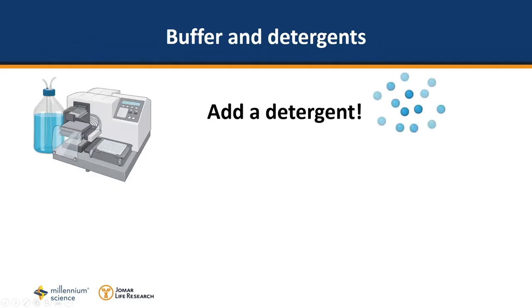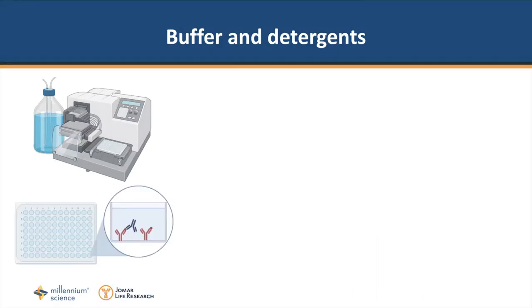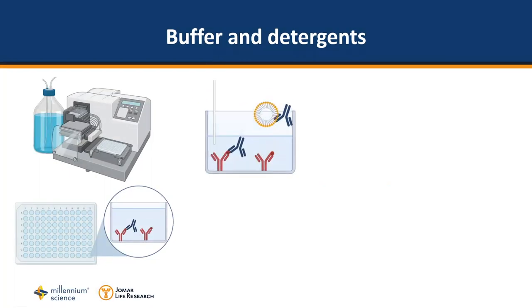My first tip is to use a detergent in your wash buffer such as Tween 20. Why do you need a detergent? Detergents limit background staining by removing poorly bound substrates. The hydrophobic end of detergents also blocks any unbound conjugation sites, again preventing nonspecific substrate binding.